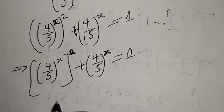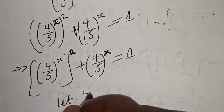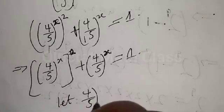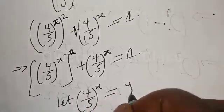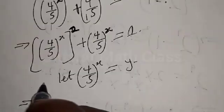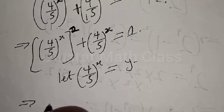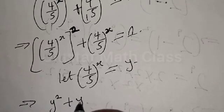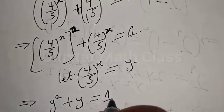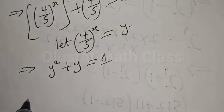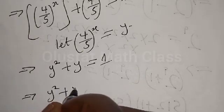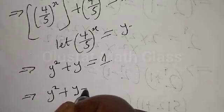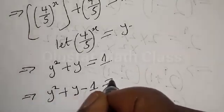Let 4 over 5 raised to the power x be equal to y. Then we have y squared plus y equal to 1, which implies y squared plus y minus 1 equal to 0.